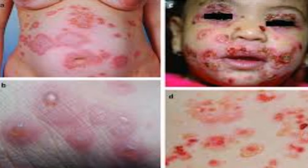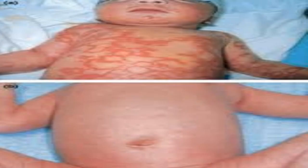Otherwise, changes of systemic lupus erythematosus are seen particularly around hair follicles and other adnexae. Lichen planus sometimes exhibits cleavage between the epidermis and the dermis, the so-called Max-Joseph spaces, in an otherwise typical lichen planus picture. Full separation of the epidermis may be seen.